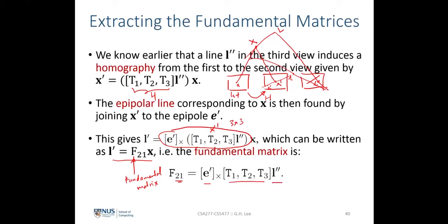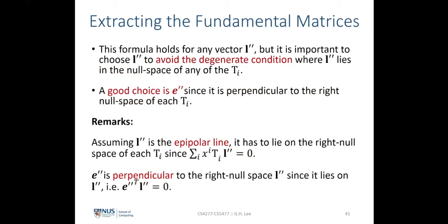This gives us the relation for the fundamental matrix F21 in terms of the trifocal tensor, the epipole in the second view, and the line l'' in the third view. This formula holds for any vector l'', but the choice of l'' must avoid degeneracy — specifically, l'' must not lie in the null space of any Ti matrix in the trifocal tensor.